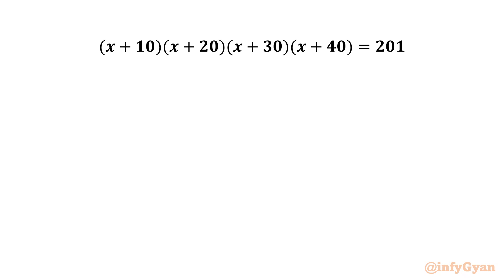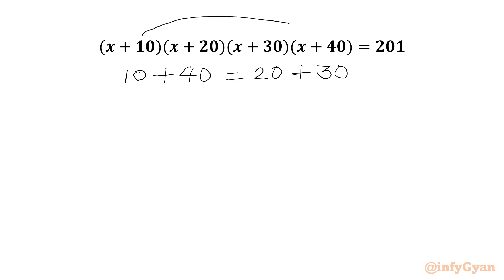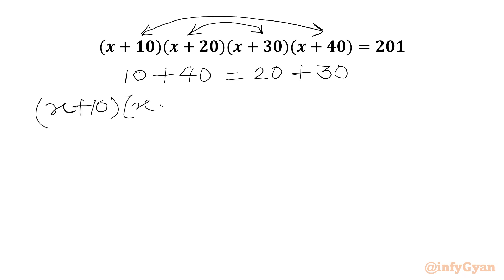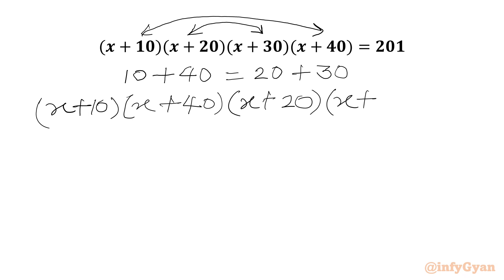So let's get started. If we add 10 and 40 we get 50, and if we add 20 and 30 we also get 50. So I will consider the product of these two brackets together: x plus 10 times x plus 40 times x plus 20 times x plus 30, equal to 201.